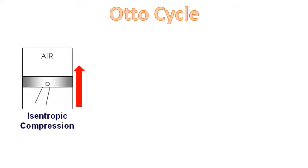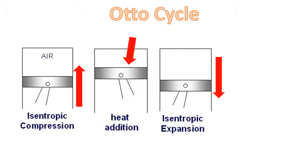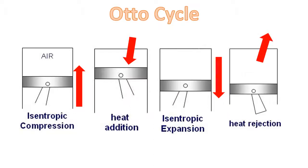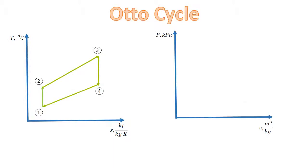The ideal Otto cycle is made up of internally reversible processes. The first one is the isentropic compression. The second one is the constant volume heat addition. The third one is the isentropic expansion. And the fourth one is the constant volume heat rejection. The temperature-entropy diagram and the pressure-specific volume diagram are the following.